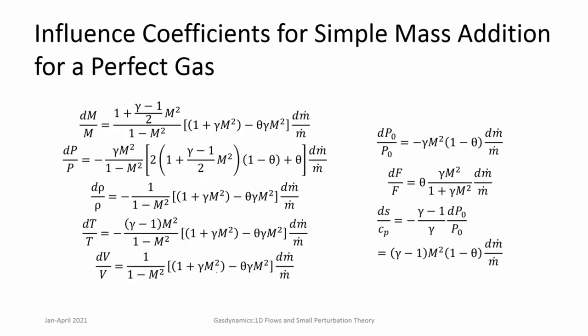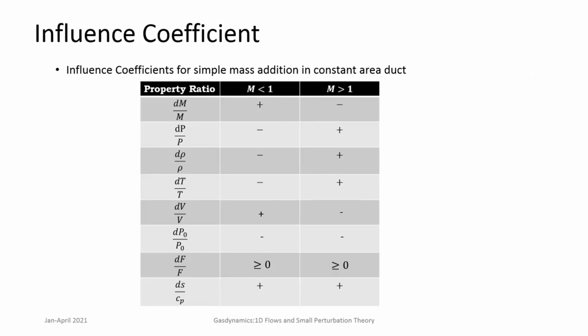Let us directly look at how mass addition affects various parameters. When the flow is subsonic, Mach number increases, velocity increases, while pressure, temperature, and density decrease — and entropy always increases. In supersonic flow it goes the other way round: Mach number decreases, pressure, temperature, and density increase, and velocity decreases; again entropy will increase.